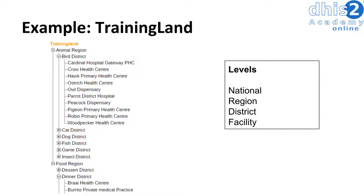An example hierarchy is Training Land. It has four levels: national, region, district, and facility. We've been using this hierarchy in various examples and should be familiar with it by now. So let's take this hierarchy and apply it to some key design principles.